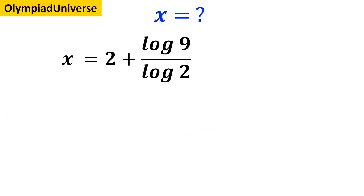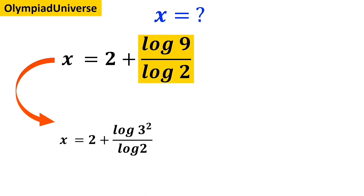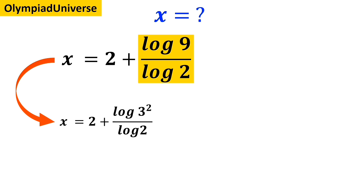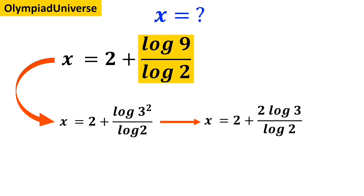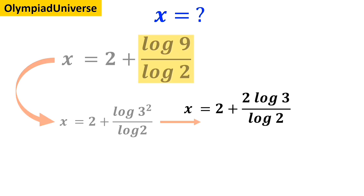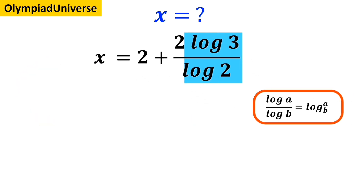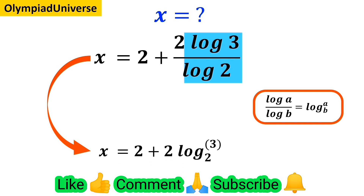Now it's time for the second fraction. We can rewrite this expression as x equals 2 plus log of 3 squared over log of 2, which simplifies to x equals 2 plus 2 times log of 3 over log of 2. According to the rules of logarithm, log of a divided by log of b is equal to log of a with base b. So we rewrite the expression highlighted in blue as x equals 2 plus 2 times log of 3 with base 2.